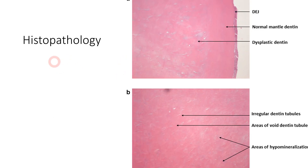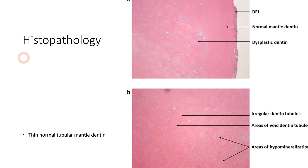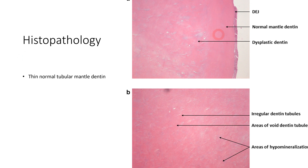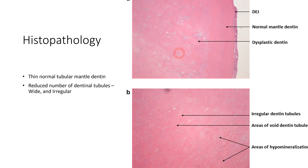Diagnosis is most often based on clinical and radiological features. However, histopathological features can also be examined. Firstly, the mantle dentine is normal. There are reduced numbers of dentinal tubules, which are wide and irregular in nature, with no proper arrangement.